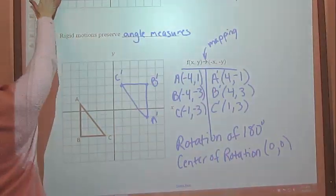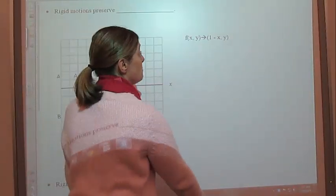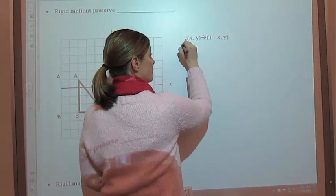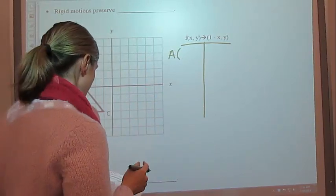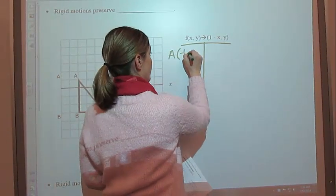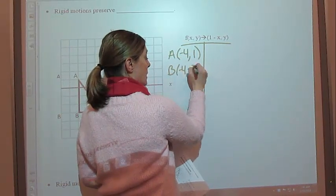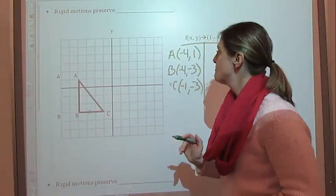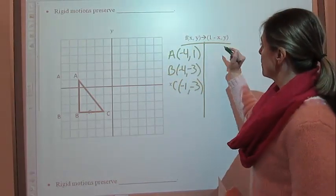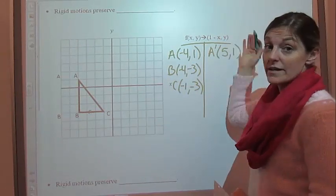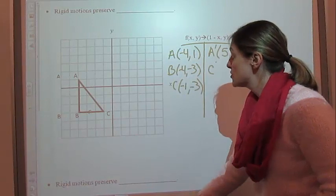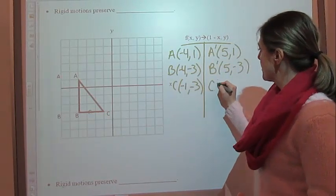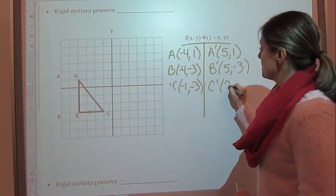Now let's take a look at the next one. We're going to map f of x, y onto 1 minus x, y. So again, let's write down our points. A was negative 4, 1; B was negative 4, negative 3; and C was negative 1, negative 3. So 1 minus negative 4 gives you 5, so A prime is 5, 1 — because the y doesn't change. Then plug in the negative 4 again for B prime — B prime equals 5, negative 3. And then C prime equals 1 minus negative 1, which gives you 2, negative 3.